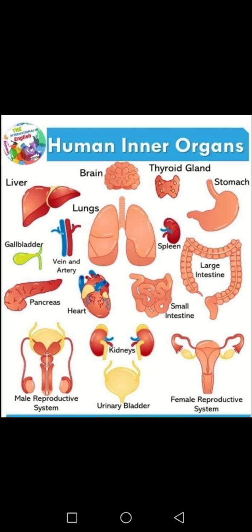First one: brain, liver, thyroid gland (thyroid granti), stomach, lungs, spleen (pleehaw), vein and artery, heart.